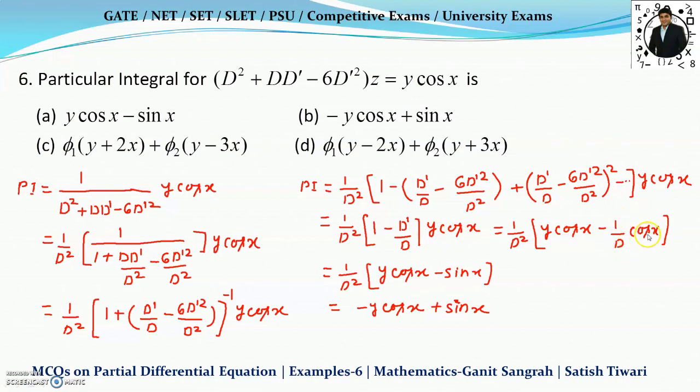Integration of cos x is sin x and here we are having the 1 by D square outside. Just take a integration two times. Y is constant quantity. The cos x having the first integration as sin x and sin x having the integration minus cos x. Similarly, sin x is having the first integration as minus cos x and cos x will have the integration is sin x. Therefore, we have the PI as minus y cos x plus sin x.